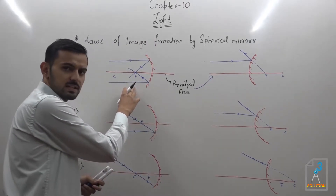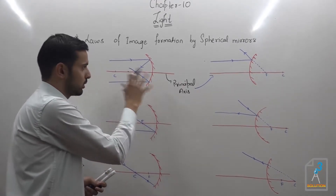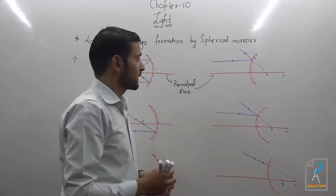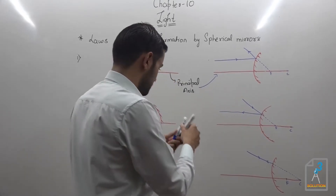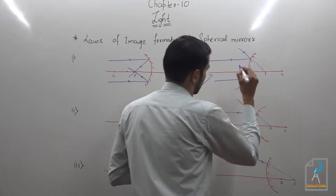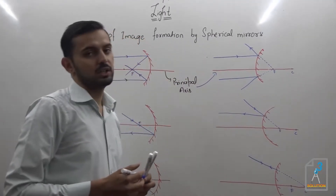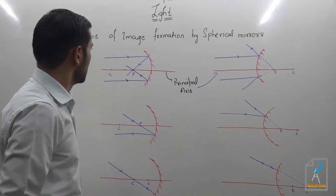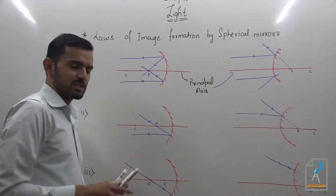In the case of the concave mirror the light rays are actually meeting — so the focus is a real focus. But for the convex mirror the light rays are not actually meeting; they only tend to meet. If I draw another set of rays they diverge such that they tend to cut at a point — that is called the focus of the convex mirror, which is a virtual focus.